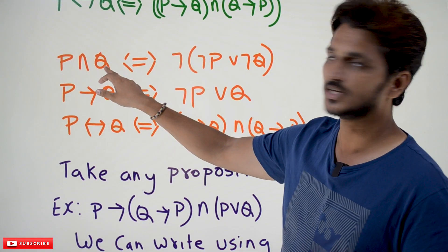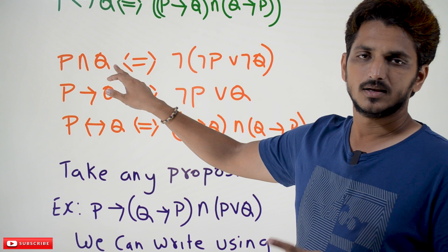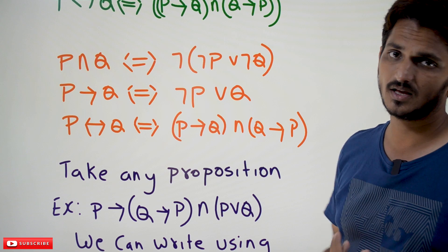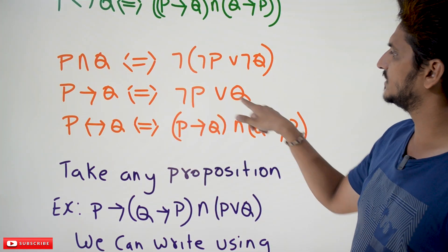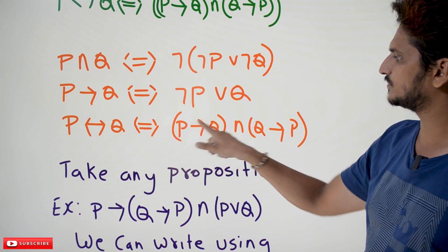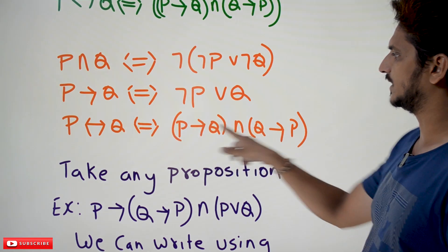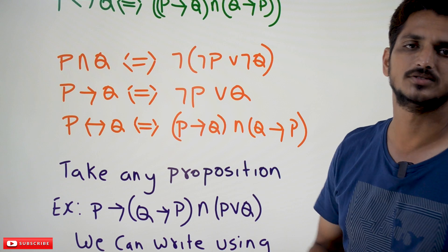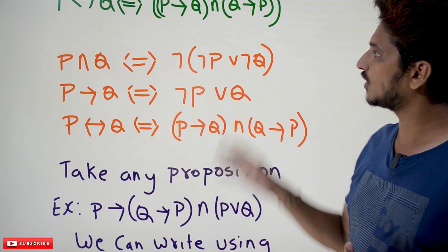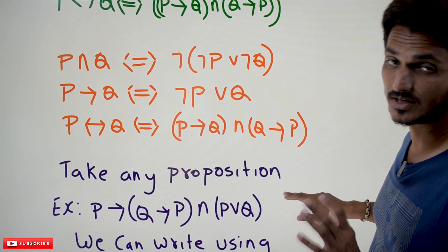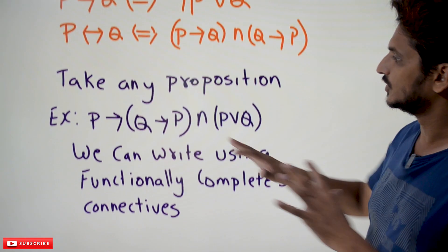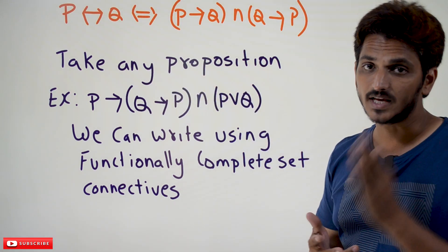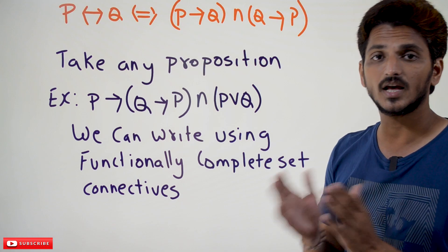Let us check the examples. P conjunction Q can be written as negation of (negation P disjunction negation Q). Similarly, P implies Q can be written as negation P disjunction Q. P double implies Q can be written as (P implies Q) conjunction (Q implies P). Implies means you can write it using disjunction, and conjunction can be written in the form of disjunction. That is why we call these two sets as functionally complete set of connectives.